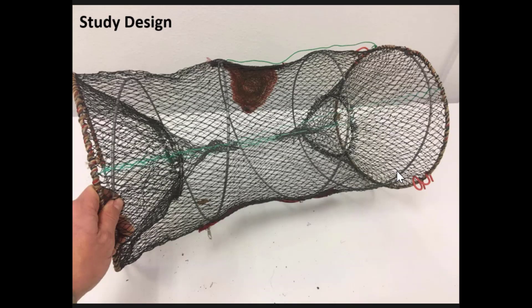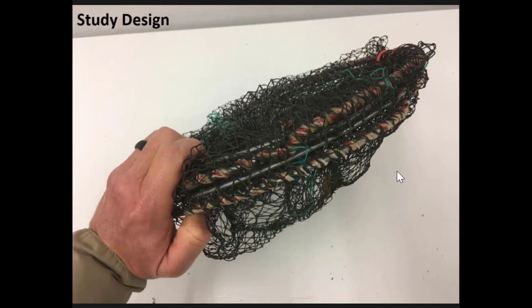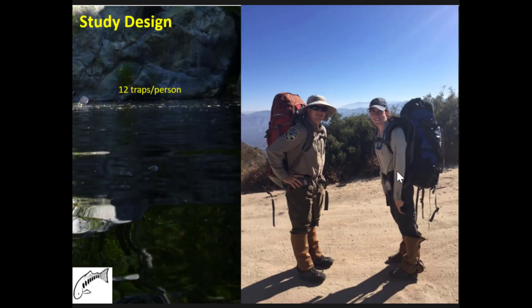We used Promar collapsible minnow traps. You can see one here expanded—they have funnel openings, a little zippered bait pocket, and a string attached. The key reason we use these is because they're collapsible. We're able to fit 12 of them into a backpacking pack, scrunching them down—even better in a garbage bag to compact them further—while still fitting our sleeping bag, stove, water filter, and other supplies for three days and two nights.